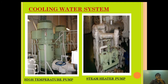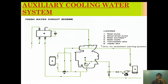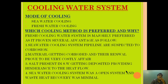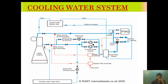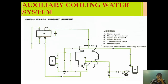Now let's look at the components of the cooling water system. The high temperature pump and the steam heater pump are both provided. As shown in the diagram, in normal operating conditions the HT pump raises system pressure to around 4 to 5 bar. When the engine is stopped, the preheater pump runs and maintains the pressure at around 4 to 5 bar in the system.